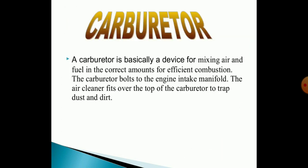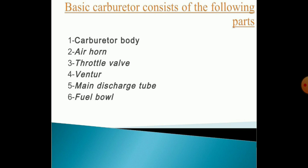What is the actual function and working of a carburetor? A carburetor is basically a device for mixing air and fuel in the correct amounts for efficient carburation. The carburetor bolts to the engine intake manifold. The air cleaner fits over the top of the carburetor to trap dust, dirt, and other unwanted particles from entering the air-fuel mixture. The carburetor consists mainly of the following parts: the body of the carburetor, air horn, throttle valve, venturi (the most important part), main discharge tube, and fuel valve.